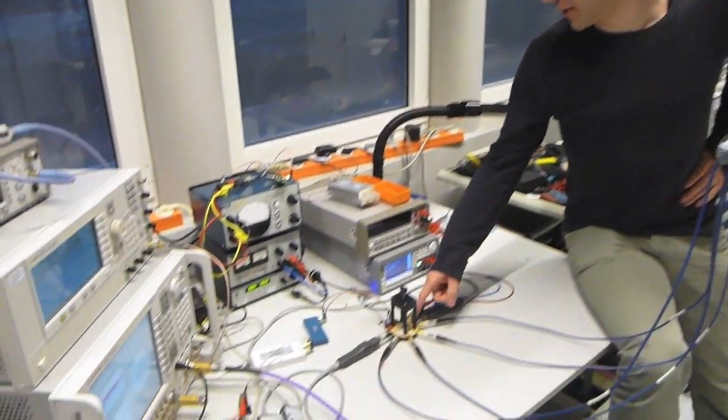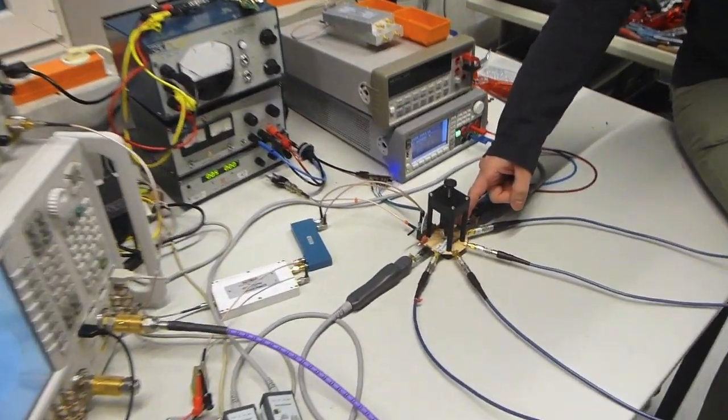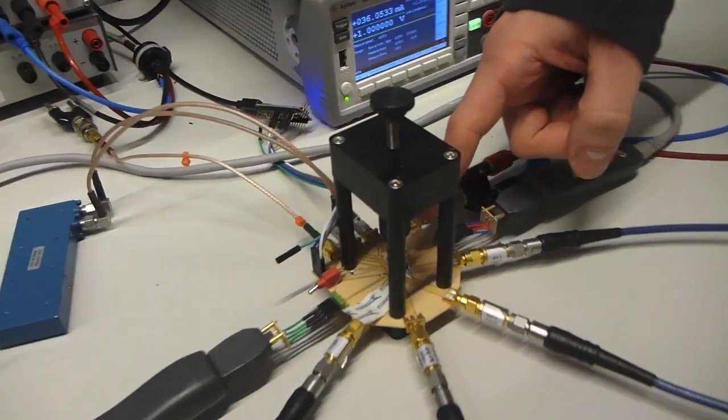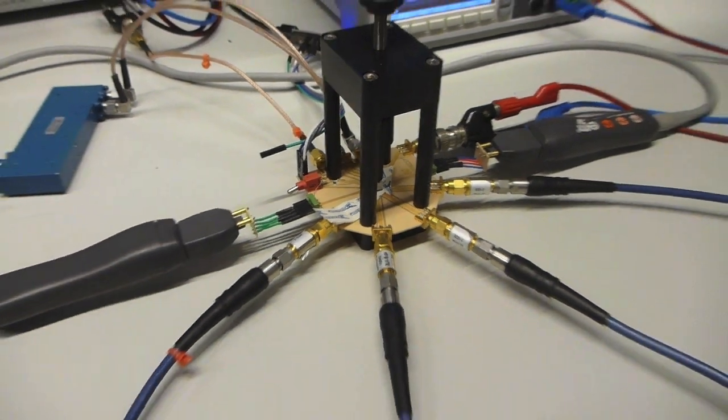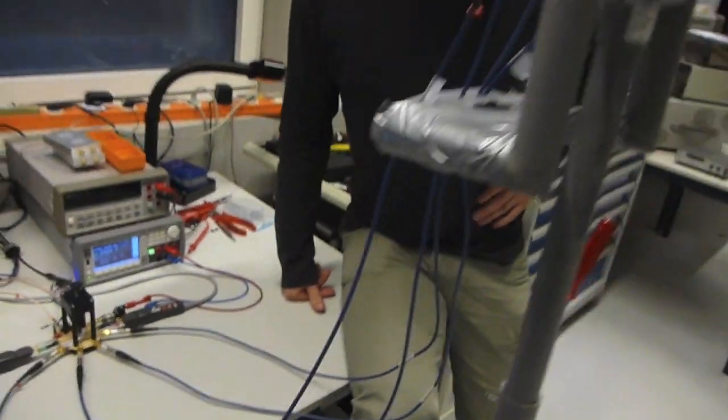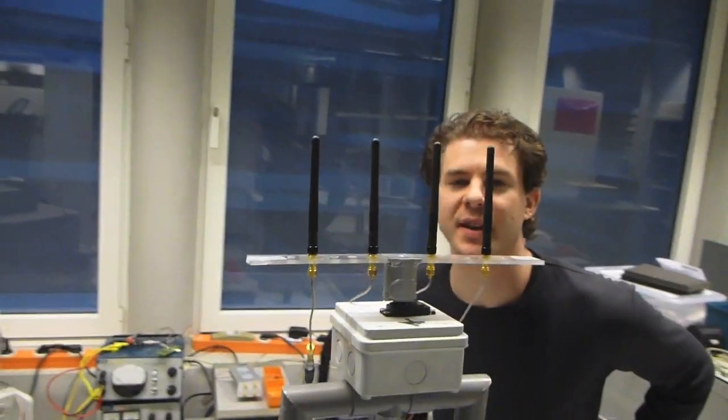So here we have our setup with the beamforming chip mounted on a PCB and four inputs which are going to our four antennas here in our antenna array.